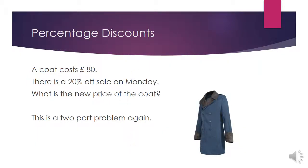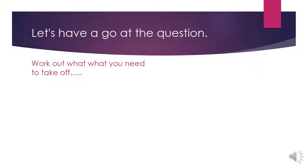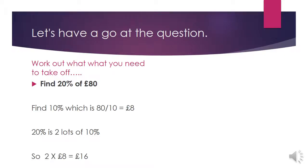I prefer to use the bubble method — I find it a little bit easier. As long as you remember, start with 10% and work out from there. There is a 20% off sale, so our next problem uses this method. We need to work out 20% of the coat's price, which is £80. This is a two-part problem: first, work out what to take off — that is, 20% of £80.